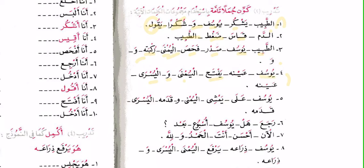Number 4: يوسف، عينه، يفتح، اليمنى، و، يسرى — يوسف يفتح عينه اليمنى وعينه اليسرى — Yusuf opens his right eye and his left eye. Number 5: يوسف، على، يمشي، قدمه، اليمنى، و، قدمه، اليسرى — يوسف يمشي على قدمه اليمنى وقدمه اليسرى — Yusuf walks upon his right foot and his left foot.